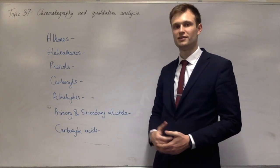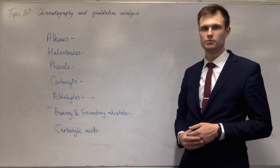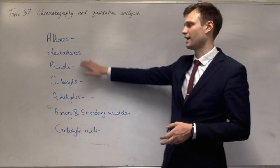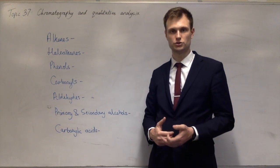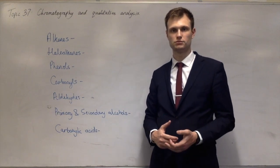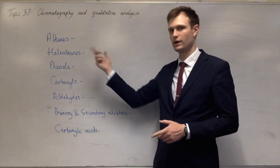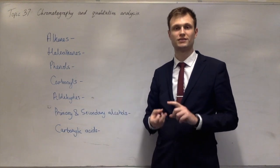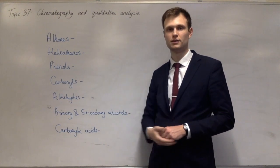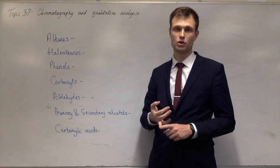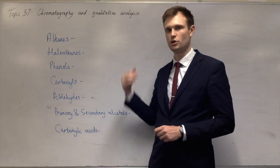The next one is haloalkanes. If you mix a haloalkane with aqueous silver nitrate solution and ethanol: if it makes a white precipitate, then it's a chloroalkane; if it makes a cream precipitate, then it is a bromoalkane; and if it makes a yellow precipitate, then it is an iodoalkane.